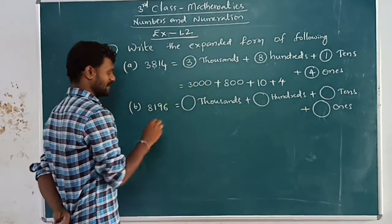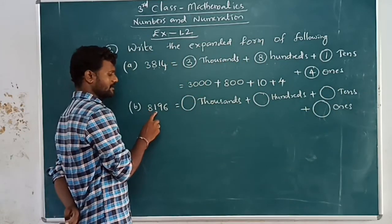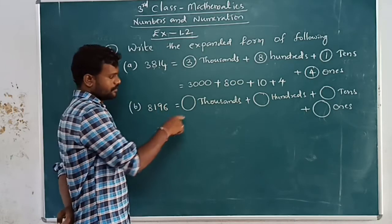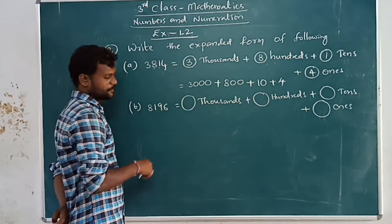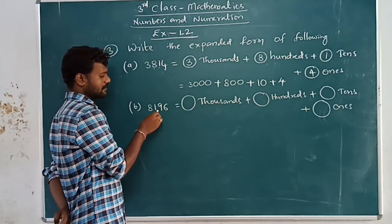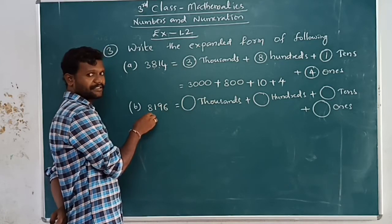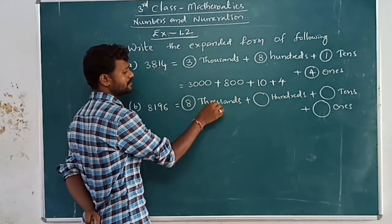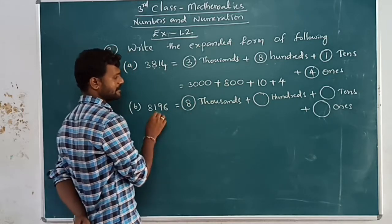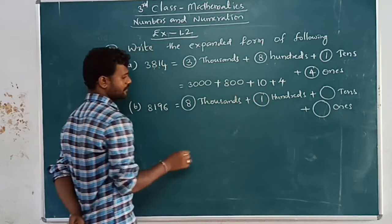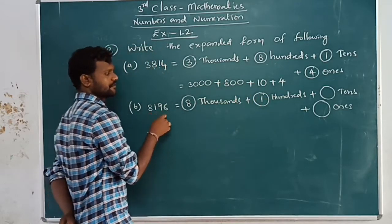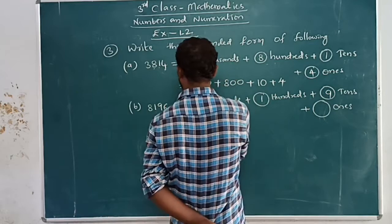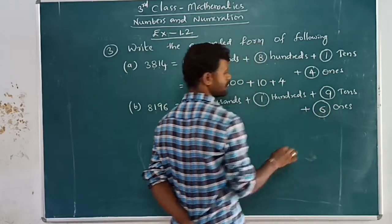Read this number: eight thousand one hundred and ninety-six. What is in thousands place? Eight. So eight thousands. Next in hundreds: one hundred. Next in tens place: nine is there in tens place. And what is in ones place? Six is there in ones place.